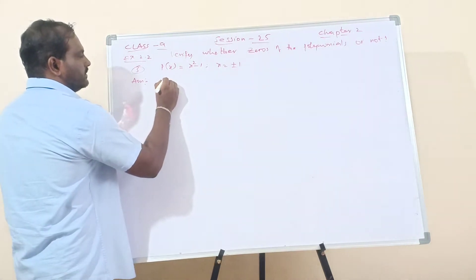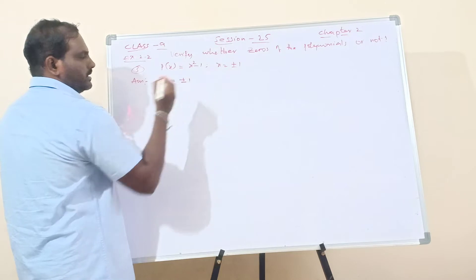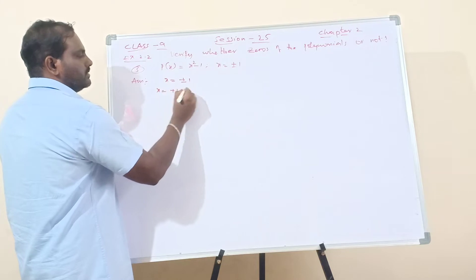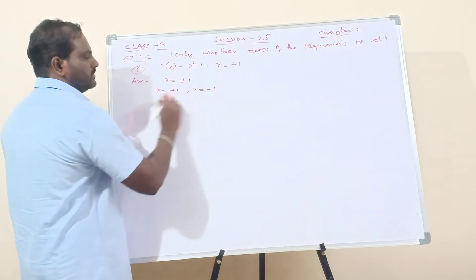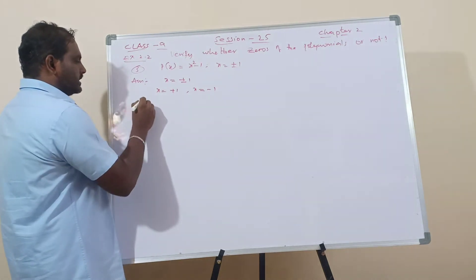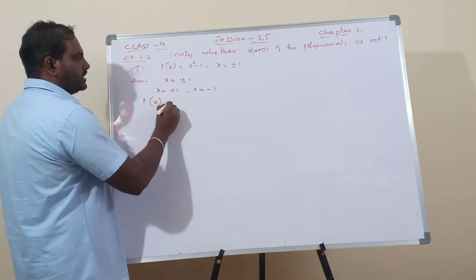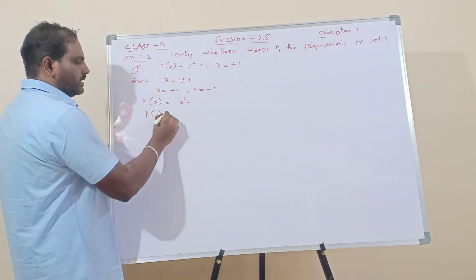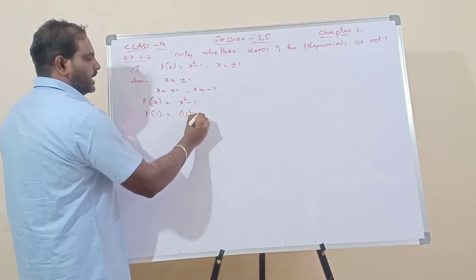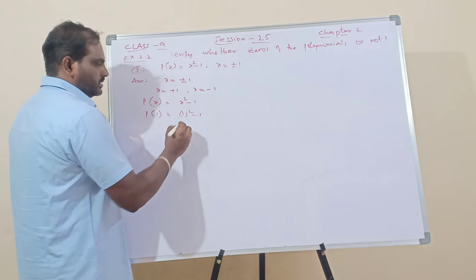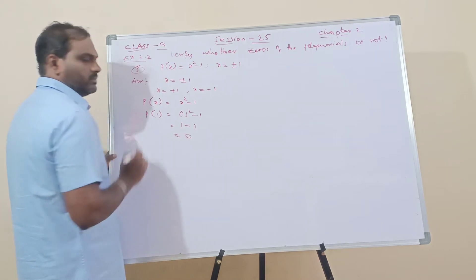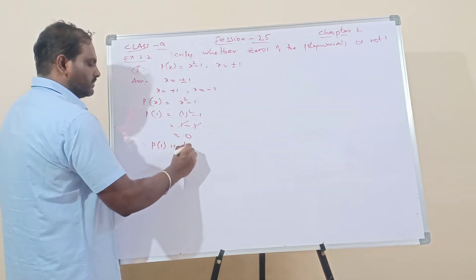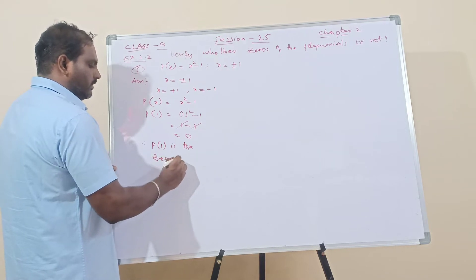Now for this question, what is given: x equals plus or minus 1. That means it has two values: x equals plus 1 and x equals minus 1. Let us check whether each is a zero or not. P of x equals x squared minus 1. First, p of 1: that is 1 squared minus 1, which is 1 minus 1, which is 0. Therefore p of 1 is the zero of the polynomial.